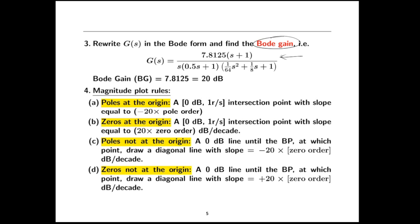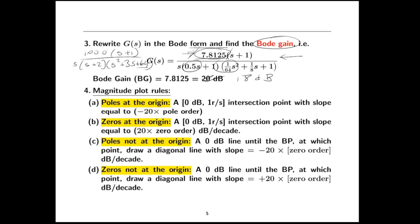After you have your breakpoint table, you want to extract the Bode gain from the transfer function. This is the Bode form of a transfer function, where we've factored out all of the coefficients in the lowest power of S. Then we convert that into dB for the Bode gain. So 7.8125 is actually closer to 18 dB. The loop transfer function here was 1000(S+1) over S(S+2)(S²+3S+64), and we factored out the 2 and the 64, so 1000 divided by 2 divided by 64 gives about 7.8 — that's your Bode gain.